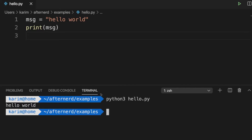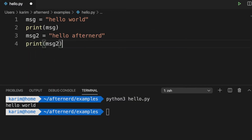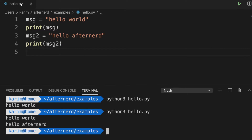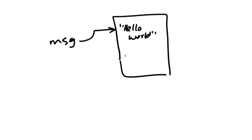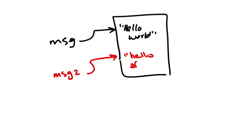Now, what if in addition to that, we say message two is equal to Hello After Nerd, and then we print message two? Python prints Hello World first, and then Hello After Nerd. Under the hood, we'll have another variable name message two pointing to a new value in memory — Hello After Nerd. This is how things look in memory after these two assignment statements.